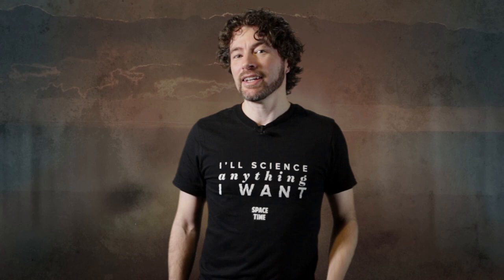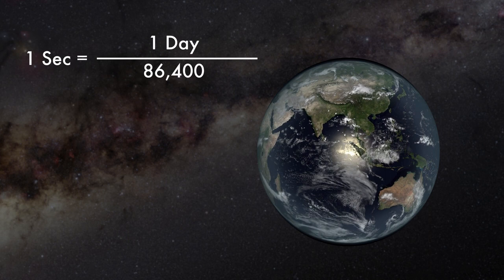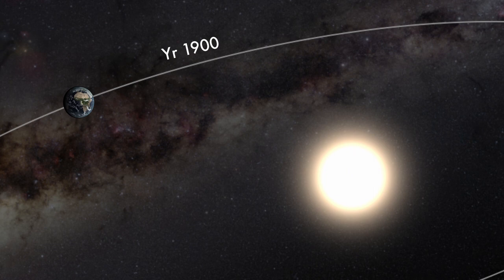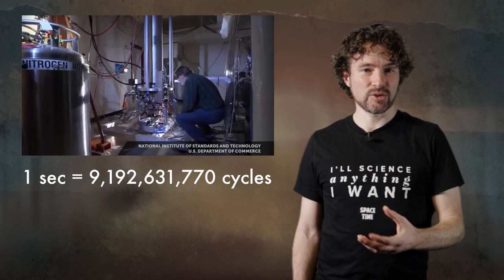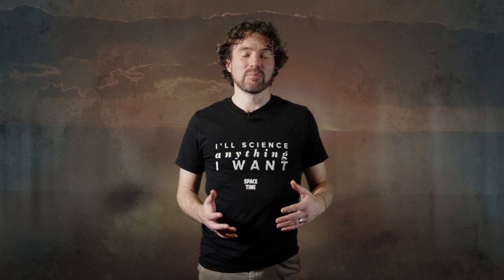You might think of a second as just being a length of time, but in fact it's defined based on cycles. It was originally defined based on the rotation of the Earth in 24 hours, but that was too tricky to measure and varied too much. So then we used the rotation of the Earth around the Sun — specifically the year 1900 — but again it wasn't accurate enough. So now we define one second based on counting the number of cycles of light emitted from a cesium atom. That's 9,192,631,770 cycles of the radiation corresponding to the transition between two hyperfine levels of the ground state of the cesium-133 atom.